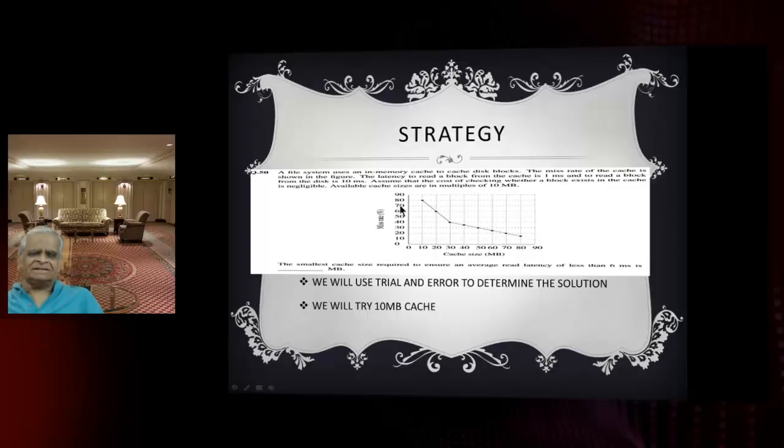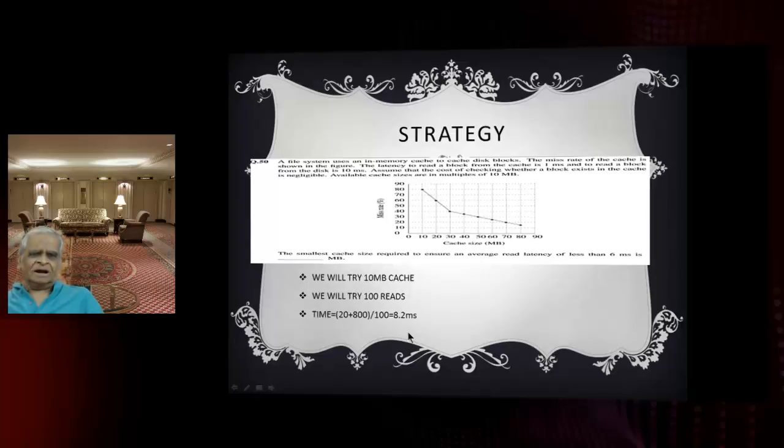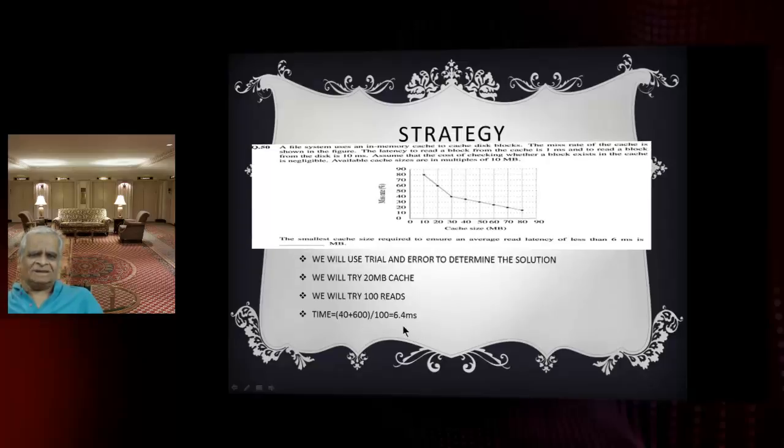With a 10 MB cache, the miss rate is 80%. For 100 reads: 80 times 10 equals 800 milliseconds latency for disk reads, plus 20 milliseconds for cache reads. Average is 820 divided by 100, which equals 8.2 milliseconds.